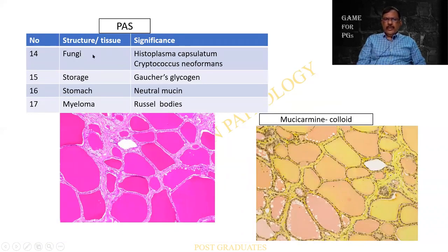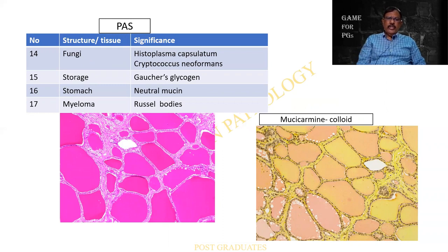The list continues. Fungi: apart from mucormycosis, Histoplasma capsulatum can be positive. Cryptococcus neoformans can also be positive. Gaucher's disease for storage. Stomach — neutral mucin. And in myeloma, Russell's bodies. You should be in a zone of comfort where you have your own list of at least 10 applications.